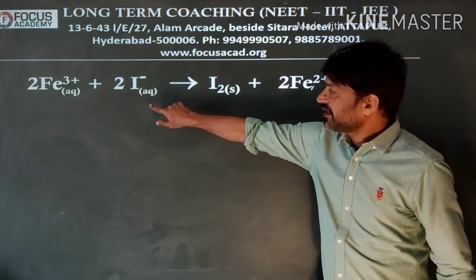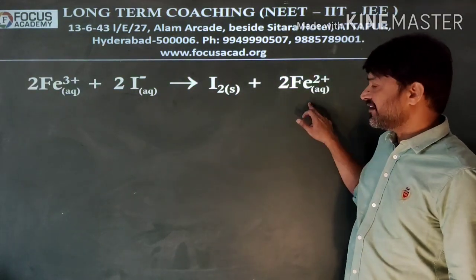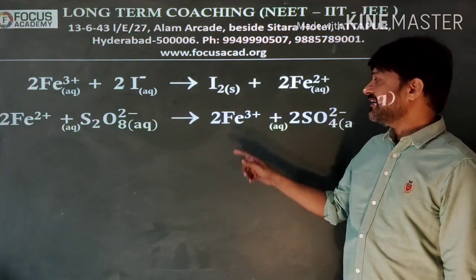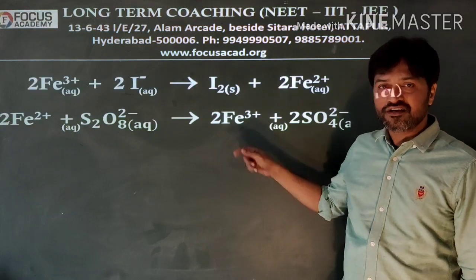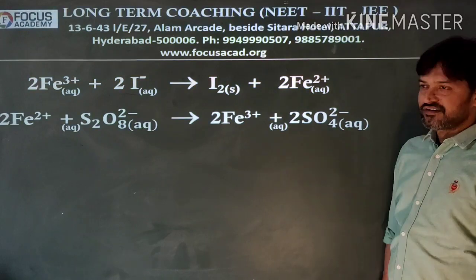So once iodide gets oxidized to iodine, it turns ferric into ferrous and will come in contact with peroxidisulfate. And it itself gets oxidized again to ferric. And peroxidisulfate becomes sulfate.